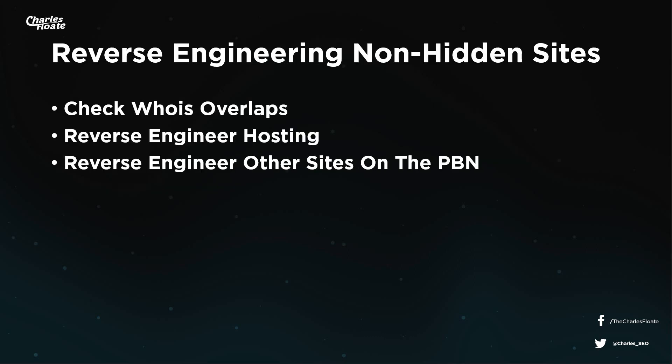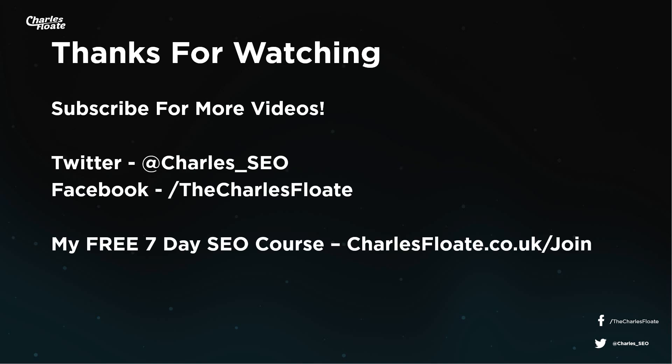You can also reverse engineer non-hidden sites. A lot of people when building PBNs will mix up which sites are on a block box and which are not, which means you can check for WHOIS overlaps, reverse engineer the hosting to see what other sites are on those IP addresses, and reverse engineer the other sites on that PBN to find more PBNs — especially if they're buying links rather than using a custom-built PBN. These tactics are quite broad, so you have to use all of them to find as many different links as you can.